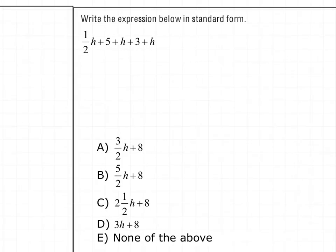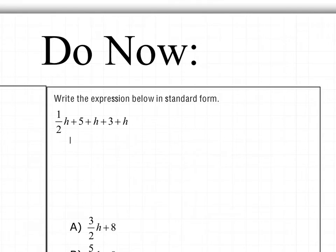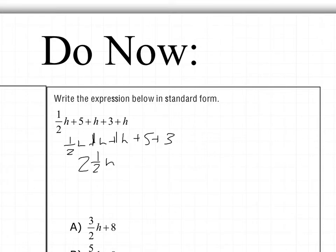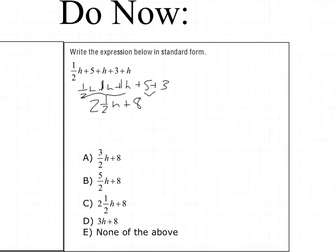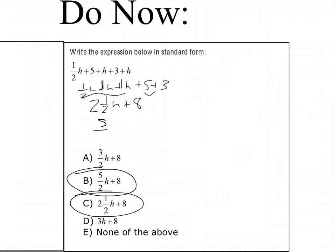Looking over here, I want to go ahead and simplify this expression. In order to do that, I need to get all of my h terms next to each other. So I have 1.5h plus h plus h plus 5 plus 3. This is 1h and 1h, so that gives me 2.5h plus 8. I can see that is answer choice C, but answer choice B is also a simplified version — the improper fraction version — which is 5/2 h plus 8.